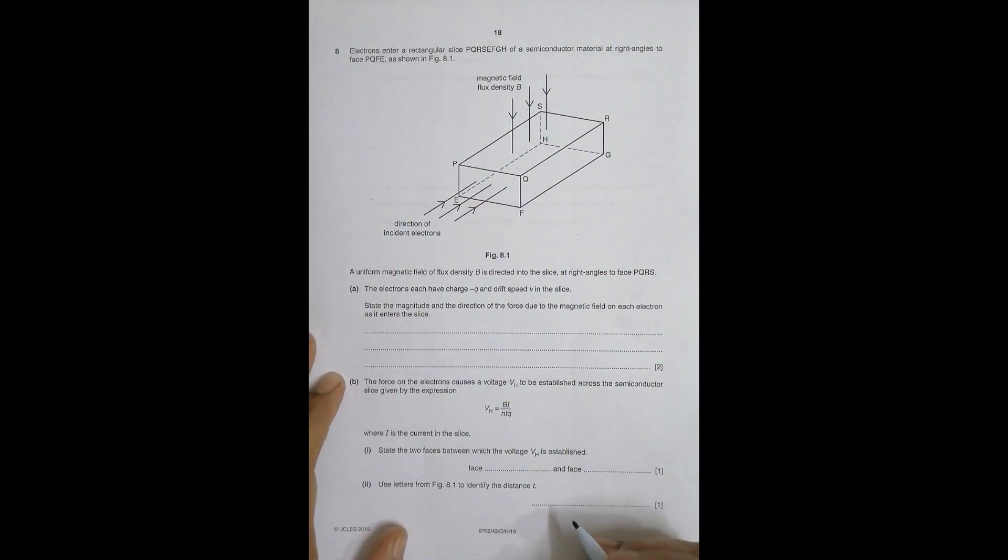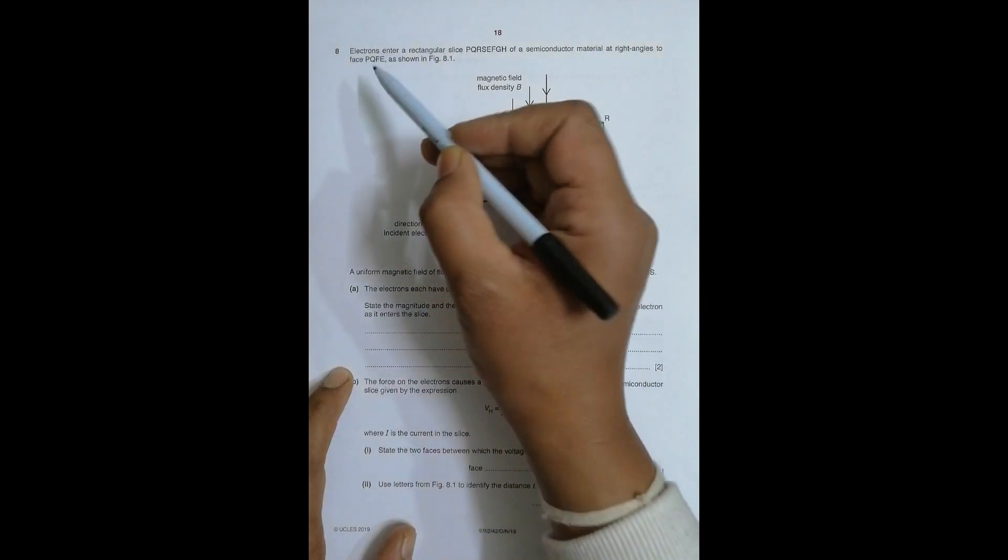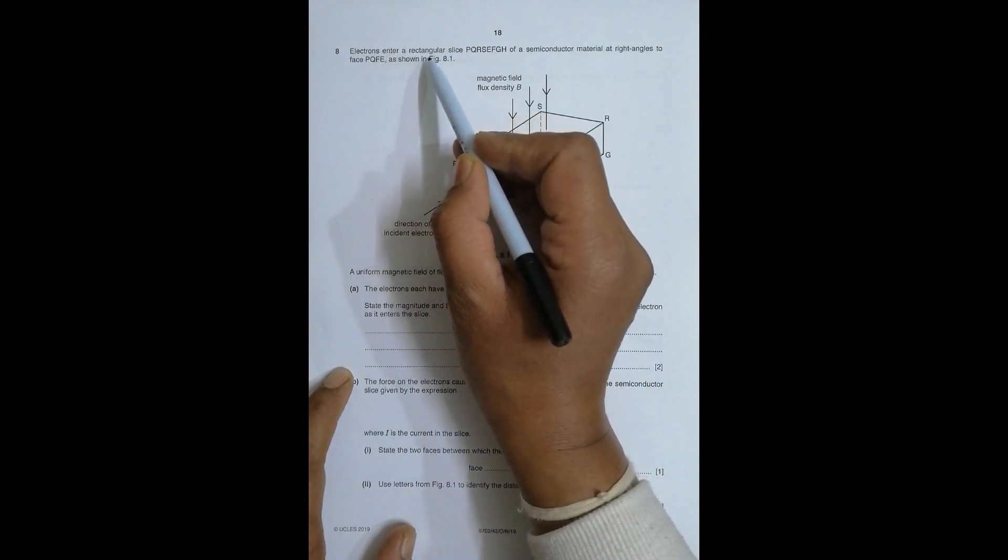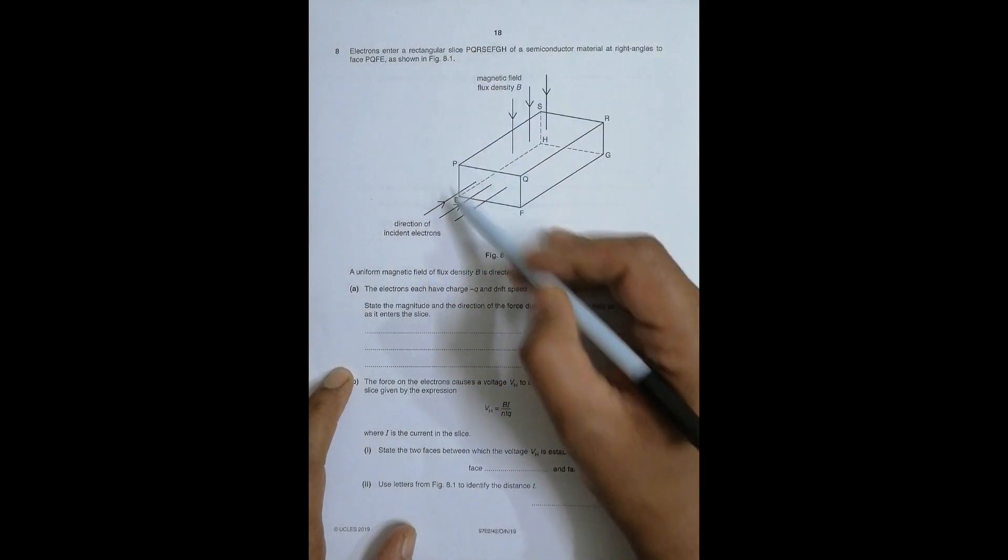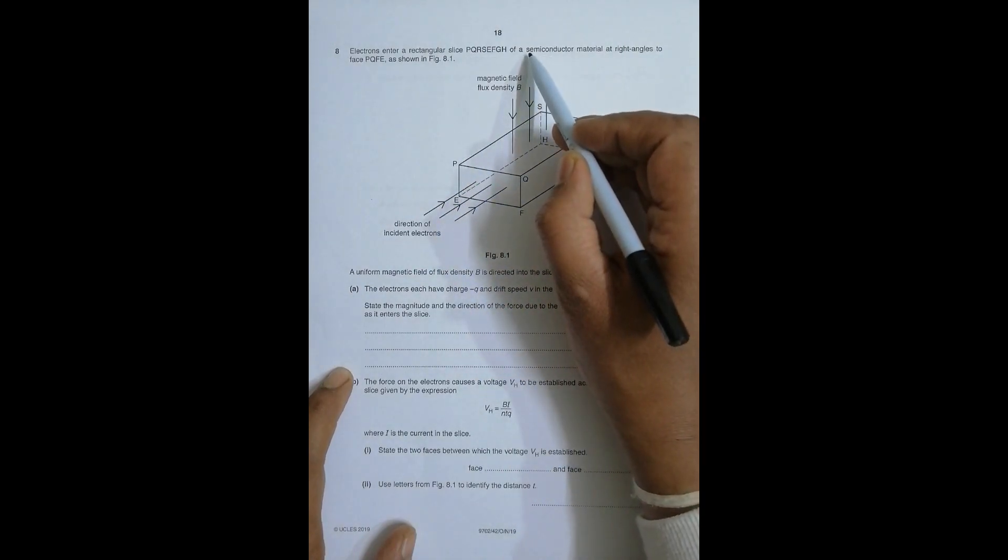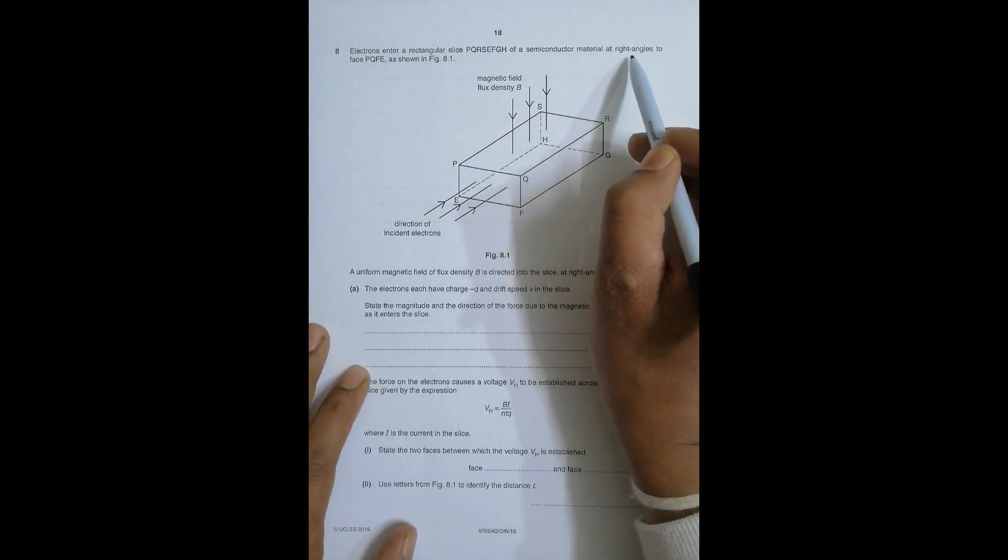Hello folks, the question for today is 2019 October November paper 42, question number 8. The question is concerned with the chapter on magnetic fields and it's about the Hall effect. Electrons enter a rectangular slice of semiconductor material at right angles to the face PQFE.